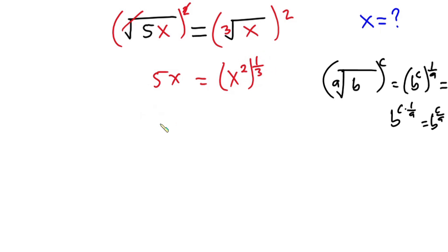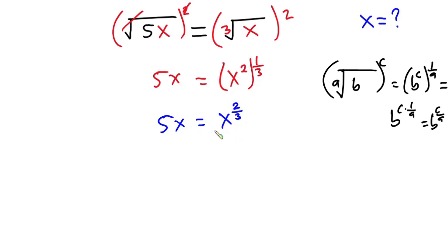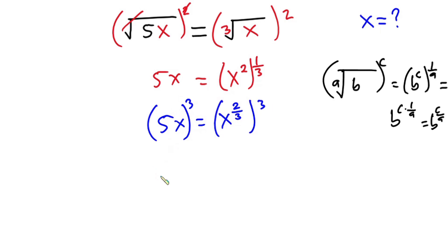So we have 5 times x is equal to x to the power 2 over 3. Now to make this equation very simple, let's raise each side of this equation to the third power, so that this side will become 125 times x to the third power.